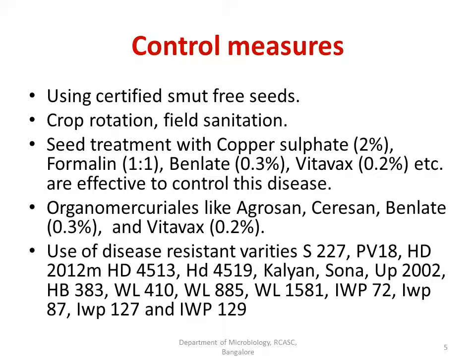Use disease-resistant varieties — prevention is better than cure. Disease-resistant varieties available include S227, PV118, HD2012, Kalyan Sona, and UP2002, among many others. To summarize the control measures: always prefer disease-resistant varieties, use smut-free certified seeds, practice crop rotation and field sanitation, and apply seed treatment with appropriate fungicides for best results.